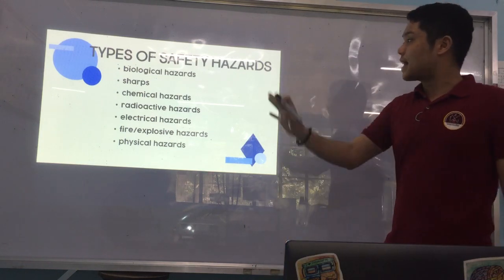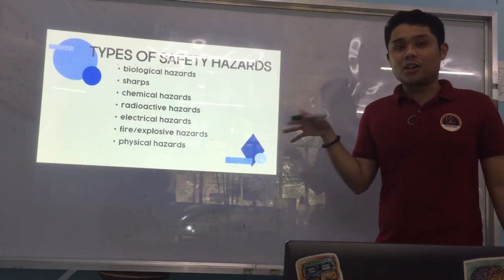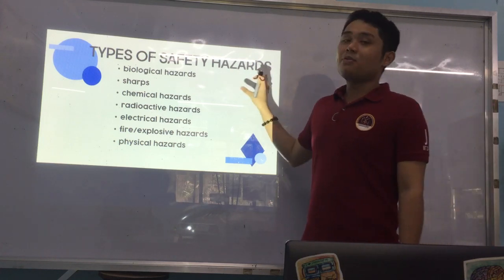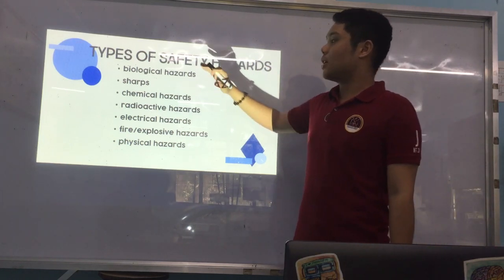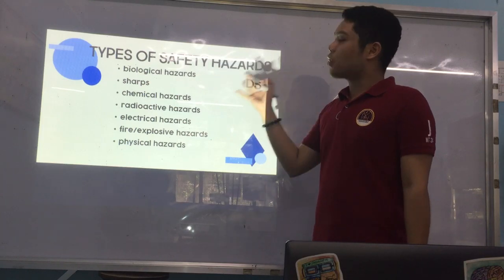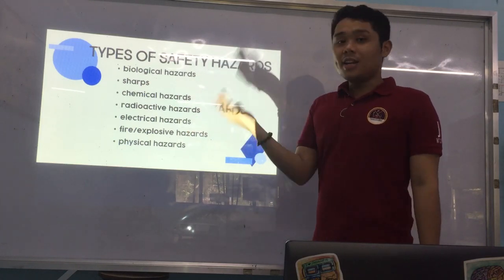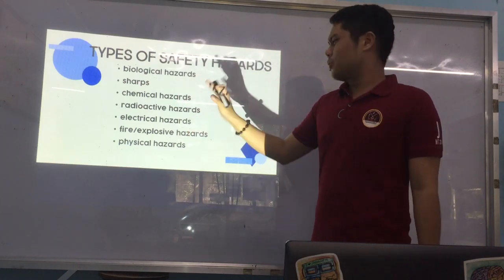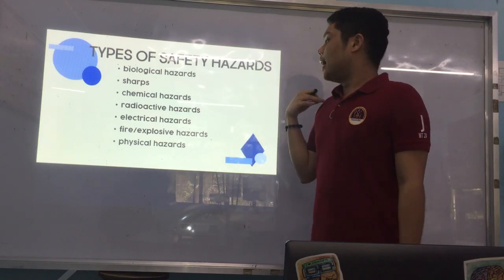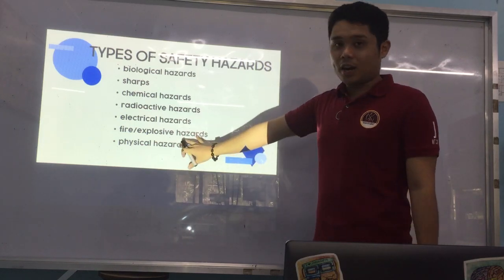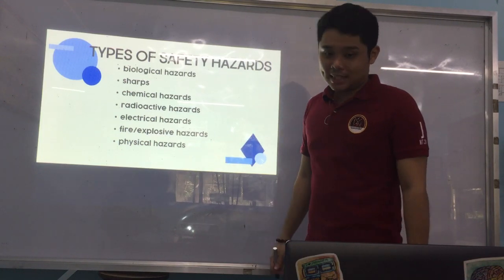We'll now proceed to the different types of safety hazards that can be found in the laboratory. First, we have biological hazards. Next, you have sharps, chemical hazards, radioactive hazards — which are usually not common in our routine clinical lab — electrical hazards, fire or explosive hazards, and physical hazards.